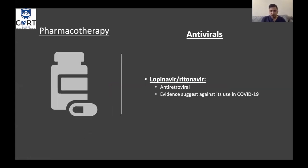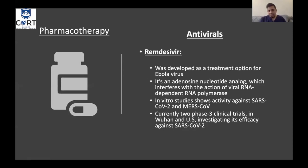Regarding pharmacotherapy: lopinavir and ritonavir are antiretroviral medications that have been tested and used in China for COVID-19, but the evidence suggests against their use; the surviving sepsis campaign recommends against them. Remdesivir, developed as an Ebola treatment, is an adenosine nucleotide analog that interferes with viral RNA-dependent RNA polymerase. In vitro studies show activity against SARS-CoV-2 and MERS-CoV, and there are currently two phase 3 clinical trials in Wuhan and the U.S. investigating its efficacy. This is the most promising treatment available so far.